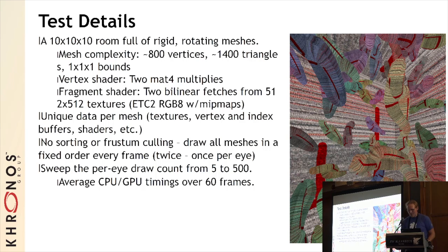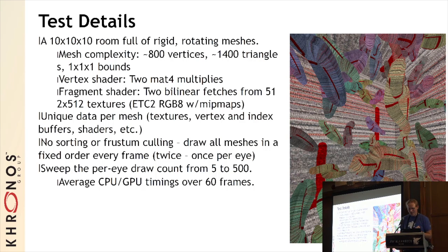The renderer is intentionally not very clever at all. It does not do any high-level optimizations like sorting, frustum culling, or multi-view — I figured these would affect both APIs more or less identically. So instead I'm just iterating through all the meshes every frame, binding the corresponding resources and drawing them, and then I repeat this process for each eye because virtual reality. I sweep the number of drawn objects from five meshes up to 500 and sample the CPU and GPU times, averaging the results over 60 frames before incrementing the draw calls.